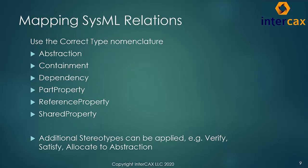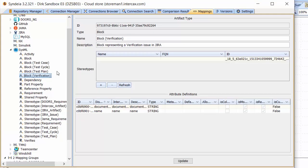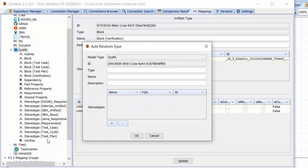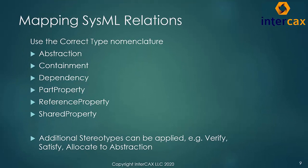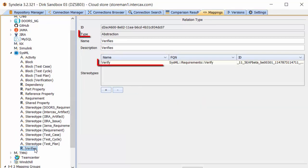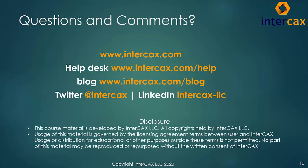SysML relation types should also be added to the list when relationship mapping is used. Many of the basic SysML relationships may already be available in the Cyndia.mappings file. Adding a new relation is straightforward: right-click the SysML Category heading, go to Add Relation Type, and add the Type, Name, Description, and any stereotypes. The nomenclature for type is important — use one from the provided list and note the lack of spaces in these type names. Some types require adding a stereotype, such as Verify on top of an Abstraction base type. More training materials on creating and using user-configurable mappings are found in the individual tool sections such as Jira and TeamCenter. We would appreciate your feedback on the self-paced Cyndia Training Package — submit your comments through the online Help Desk at www.intercax.com.